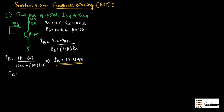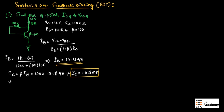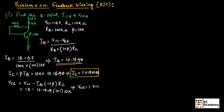Now we can find IC as beta times IB, which is 100 multiplied with 10.18 micro amperes, giving IC equal to 1.018 milli ampere. We can find VCE using the formula VCC minus IB into (1 plus beta) into RC. Substituting values: 12 volts minus 10.18 micro amperes into 101 multiplied with 10 kilo ohm, giving VCE equal to 1.7182 volts.